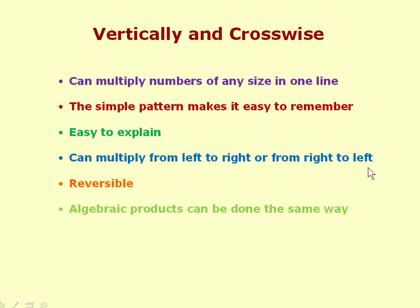Similarly, the multiplication pattern simplifies for squaring numbers, and this too is reversible — so you can do square roots in one line. Once you can do square roots you can solve quadratic equations: finding the square root of 7 is equivalent to solving x² = 7. This extends to general solution of quadratic equations and also higher-order equations.